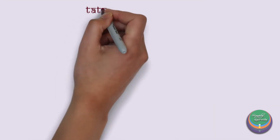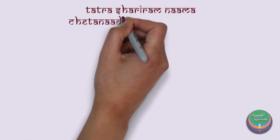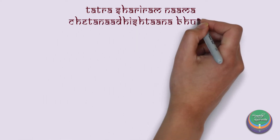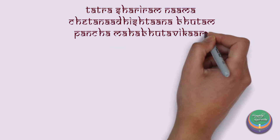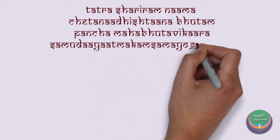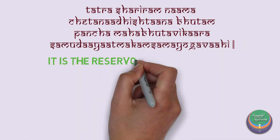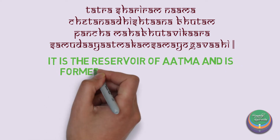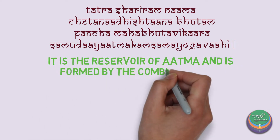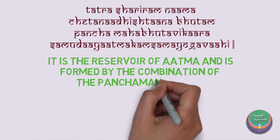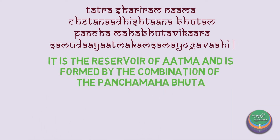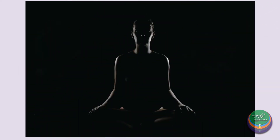Shiryate hinasti atmanam iti Shariram — Sharira is that which is abandoned by the Atma, whereon the Sharira is the Ashraya for the Atma. Tatra shariram nama chetana adhishtana bhutam pancha mahabhuta vikara samudayatmakam samayoga vahi — Sharira is the observable form of the body formed by the Pancha Mahabhuta Vikara and acts as the Adhishtana for the Chetana or the Atma.